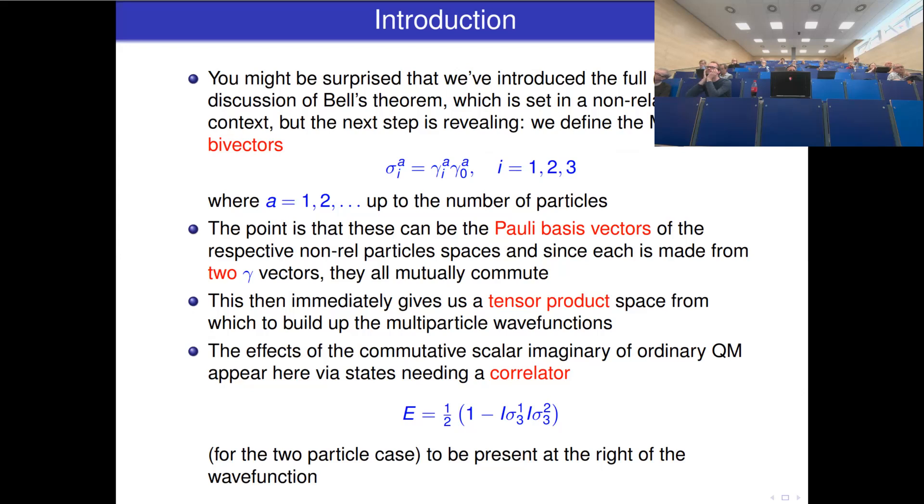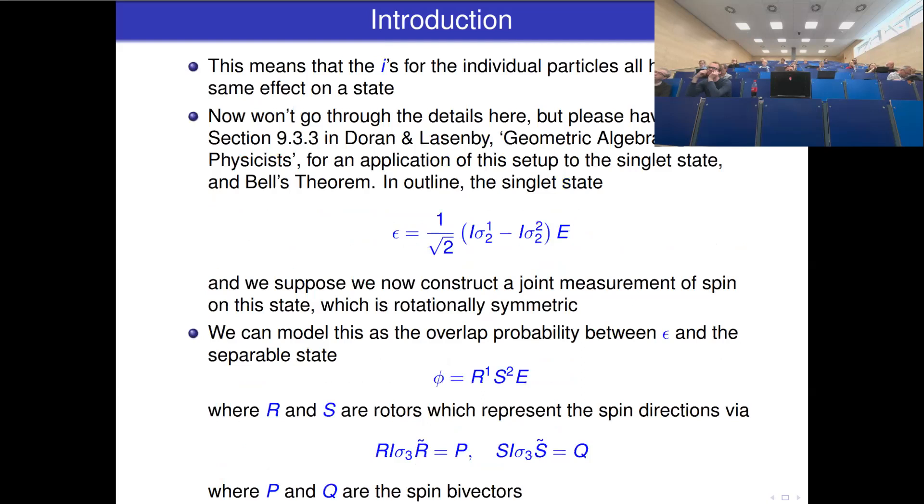If you do this in the two-particle case, it's twice as large as you would want, because you haven't taken account of the effects of the commutative scalar imaginary of ordinary quantum mechanics. You incorporate that via a correlator which sits to the right of each wave function. This correlator, we call it big E, is one-half times one minus i-sigma-31 i-sigma-32. This means the i's for the individual particles all have the same effect on the state; it correlates their action.